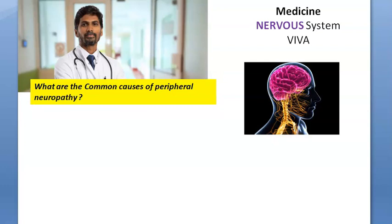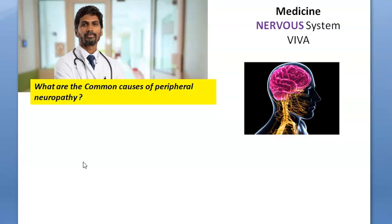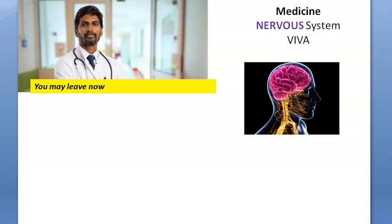What are the common causes of peripheral neuropathy? Peripheral neuropathy can be caused by metabolic conditions like diabetes mellitus, infective causes like leprosy, drugs, poisoning such as lead poisoning, thiamine deficiency, connective tissue disorders like SLE and rheumatoid arthritis, malignancy, hereditary conditions, idiopathic causes, and alcohol.